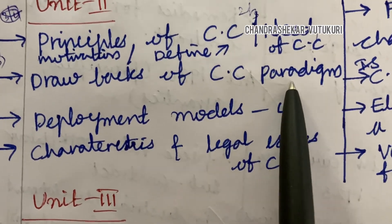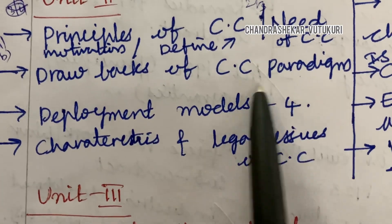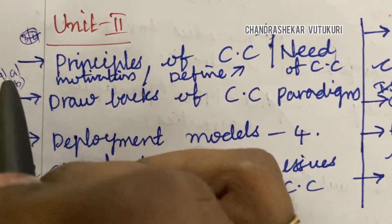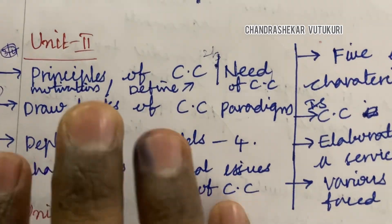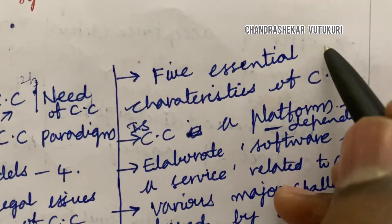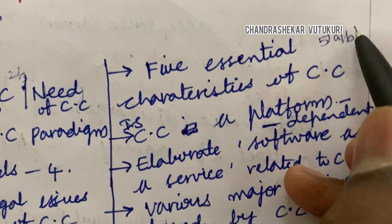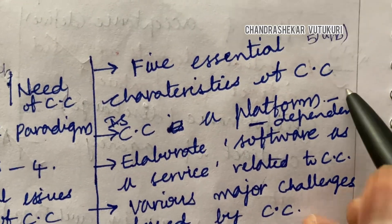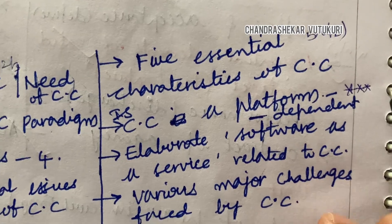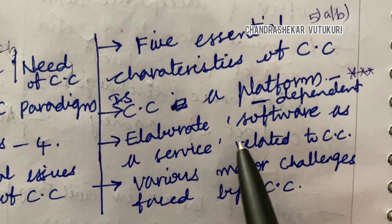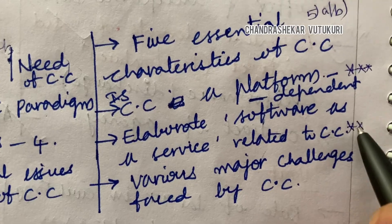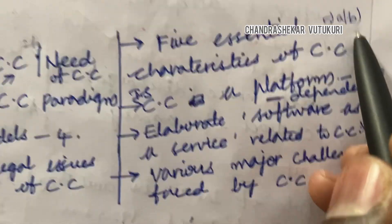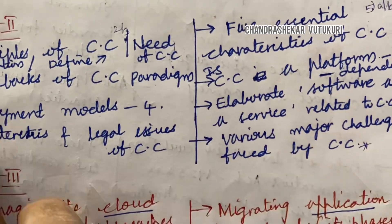Drawbacks of the Cloud Computing paradigm, deployment models of any form, and the characteristics and legal issues of Cloud Computing are topmost questions for 4A and 4B. Five essential characteristics of Cloud Computing, and whether cloud computing is platform dependent, may be a 2, 3, or 5 mark question. Software as a Service related to Cloud Computing is also a gunshot question. Various major challenges faced by Cloud Computing is said to be a 5A, 5B, as well as C and D question in the question paper.